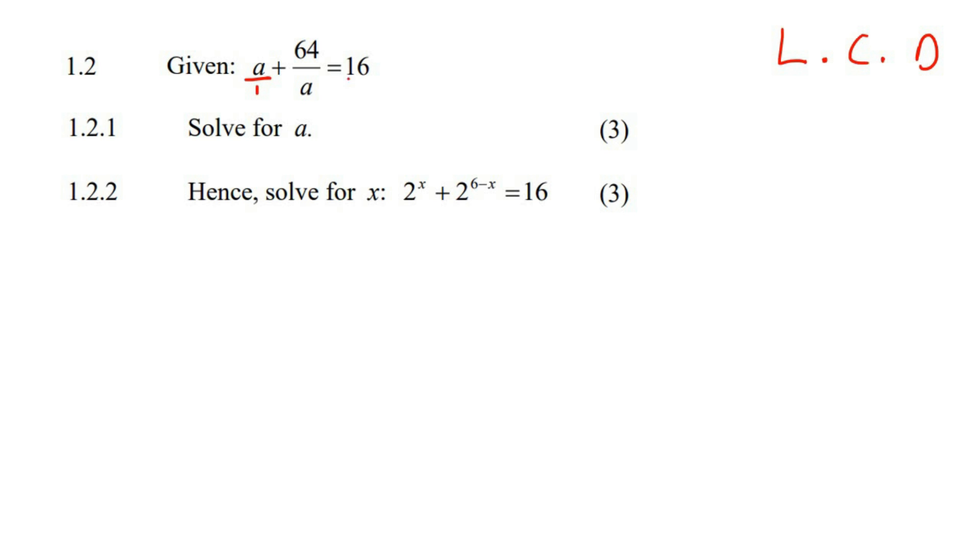So I'll put all of these over one. Can we all agree that the lowest common denominator would be A? So what that means is if I go write this out a little bit bigger, I need to turn all of these denominators into A. So I can multiply this by A, but what you do to the bottom, you do to the top. This one, I don't need to do anything because it already has an A at the bottom. This one, I'm going to multiply by A, and what you do to the bottom, you do to the top. If we then go rewrite it, we're going to end up with A squared over A plus 64 over A equals to 16A over A.